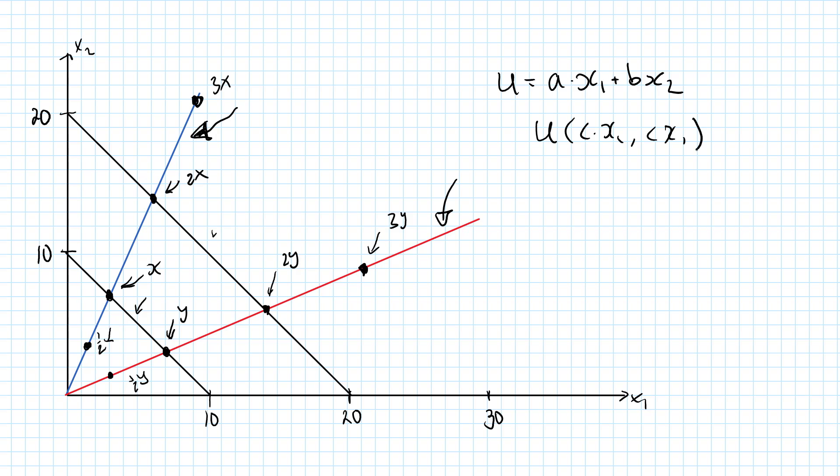Just replace x1 and x2 by cx1 and cx2. You get a times c times x1 plus b times c times x2. We can factor out the c, and that's c times (ax1 plus bx2), which is indeed equal to c times u of x1, x2. u is homogeneous of degree one, therefore preferences are homothetic.